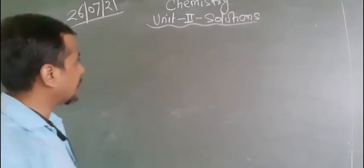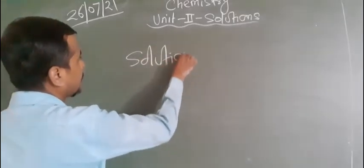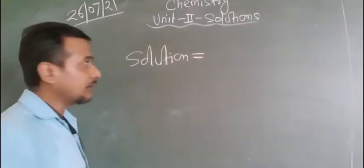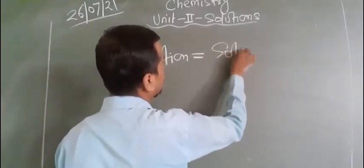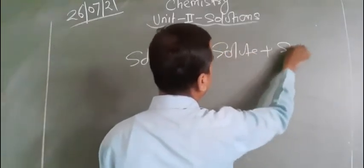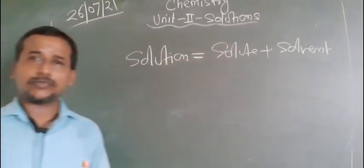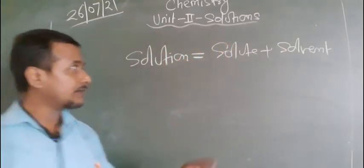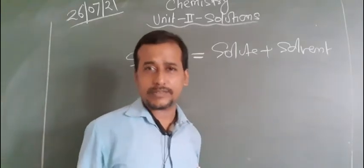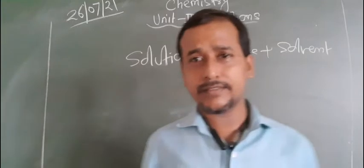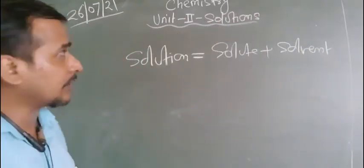So let us focus first on the solution. A solution is formed by solute and solvent. When there are only two components — one solute and one solvent — the solution is known as a binary solution. All the content in this chapter basically belongs to binary solutions, which have two components.